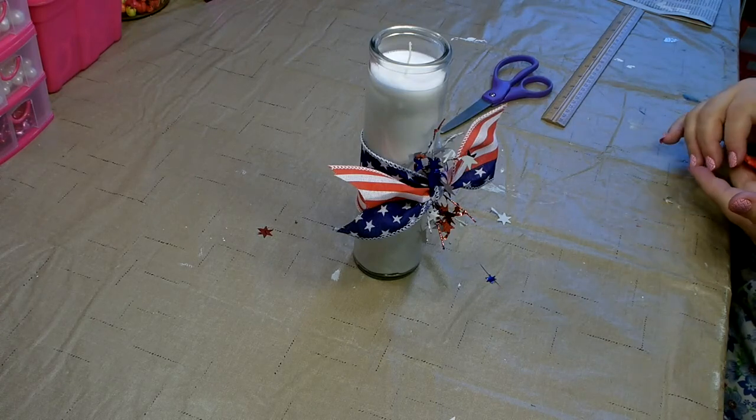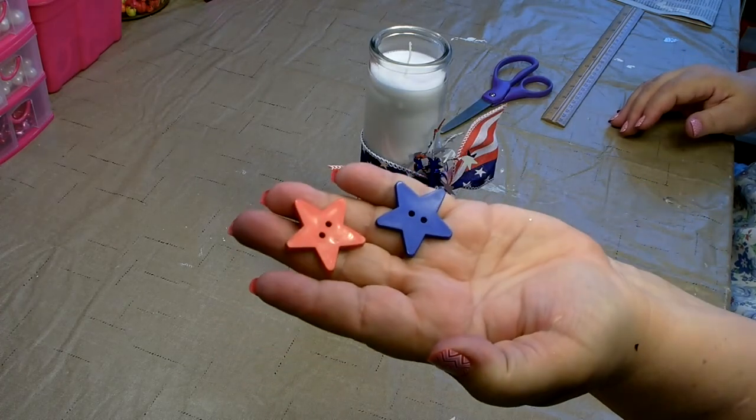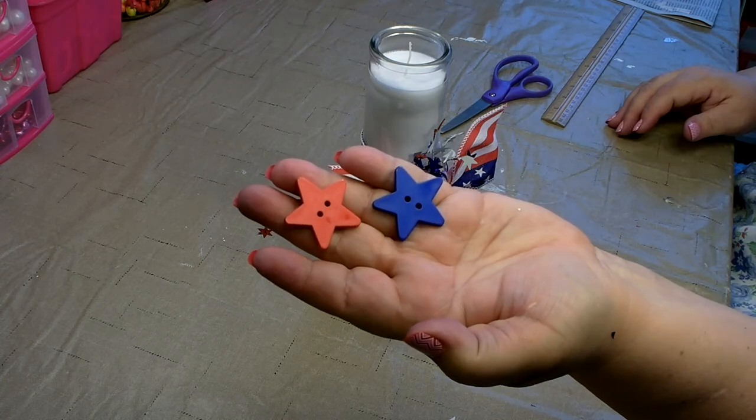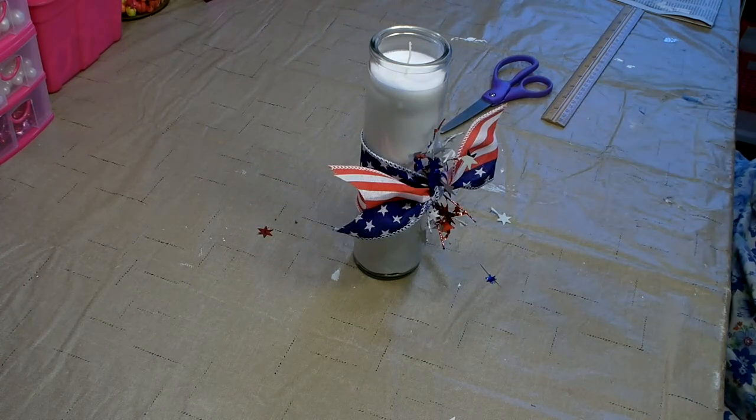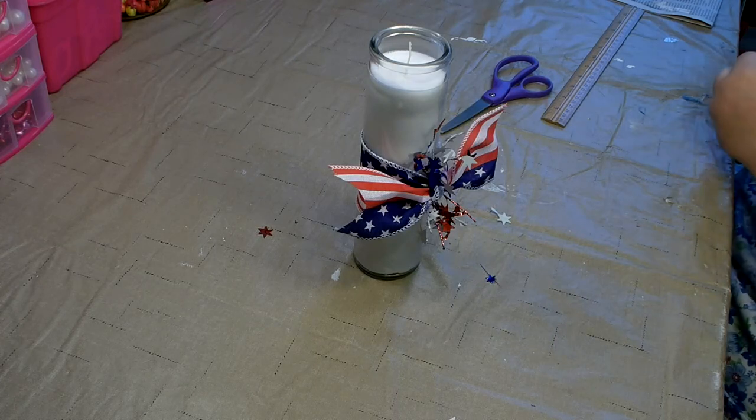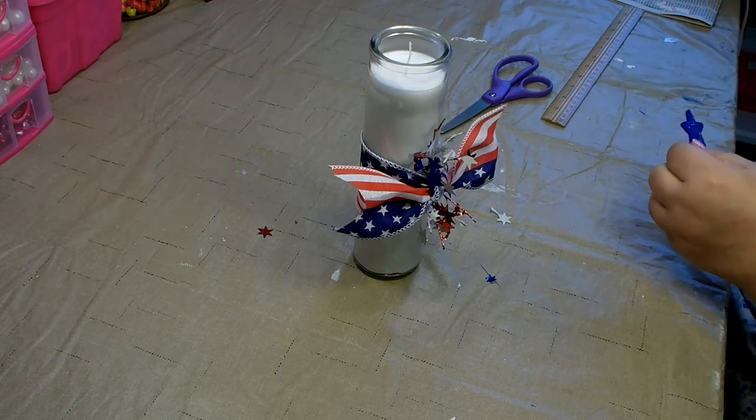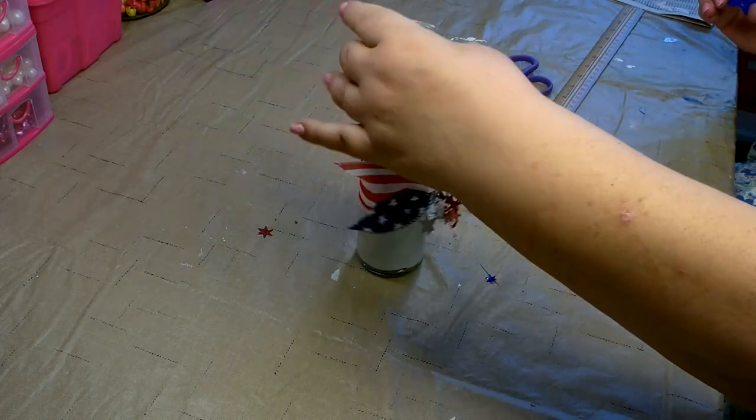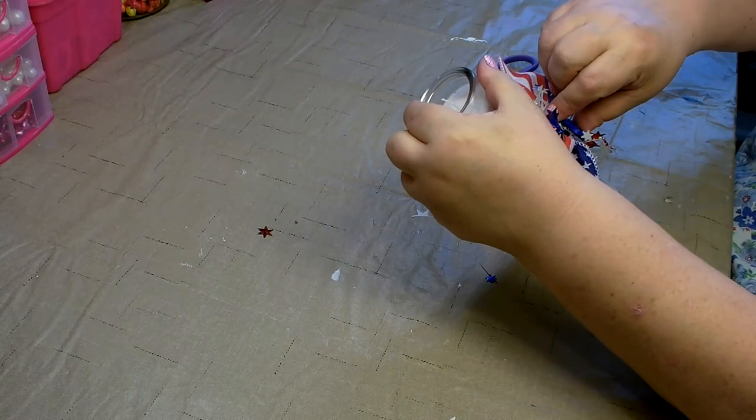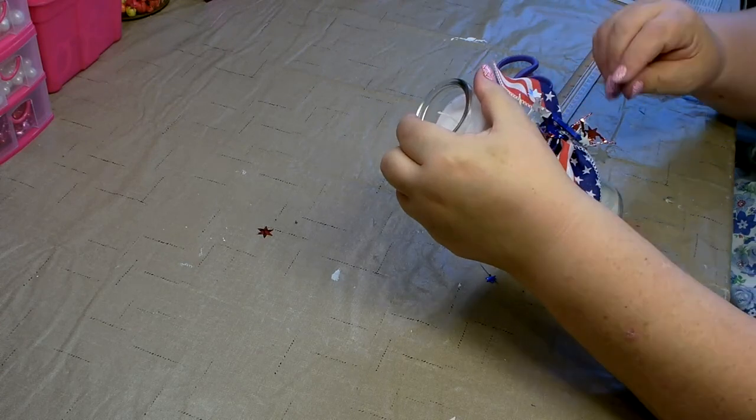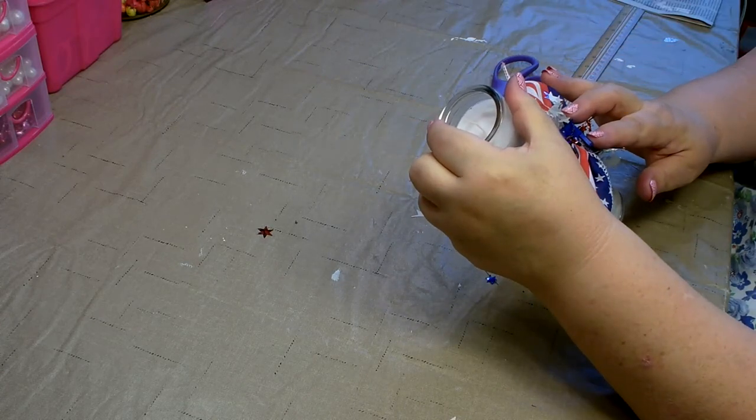I have these adorable star buttons leftover from a previous project, I did purchase them at Walmart. Simply add some hot glue and place the star over the knot on the candle. If you can't find the buttons you can always use the table scatter from Dollar Tree.